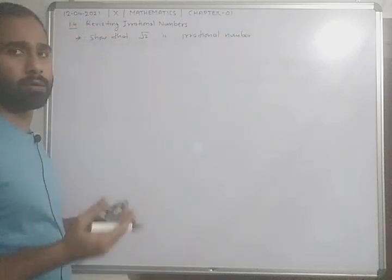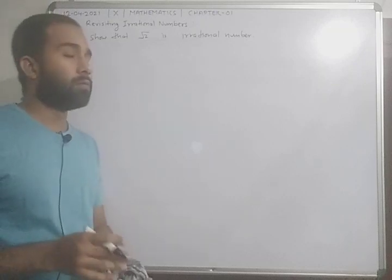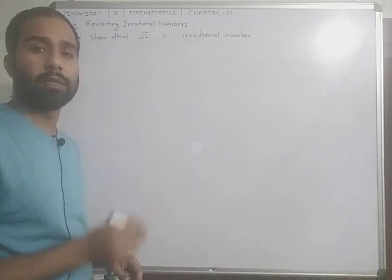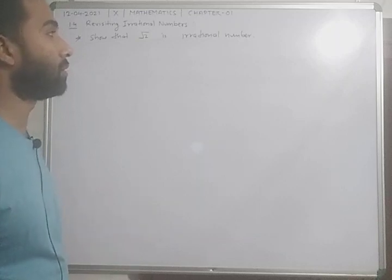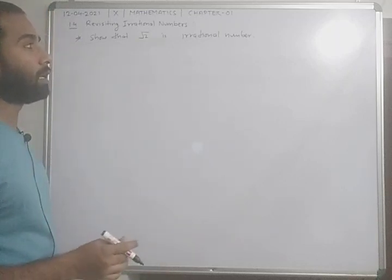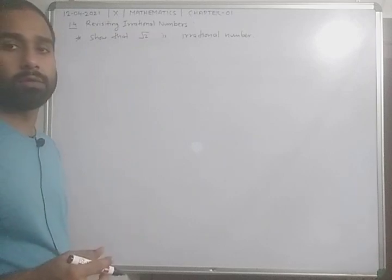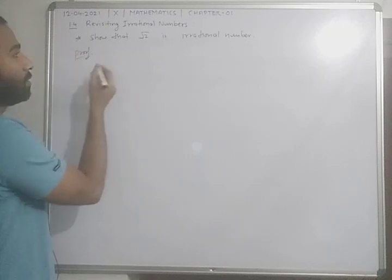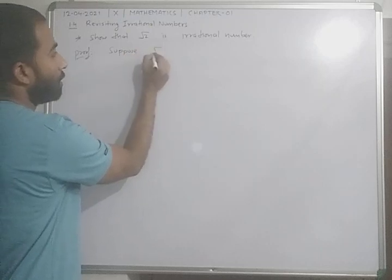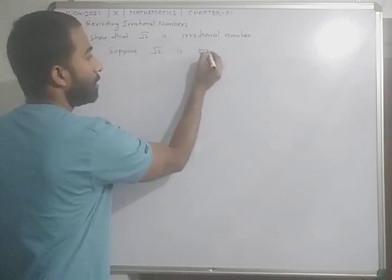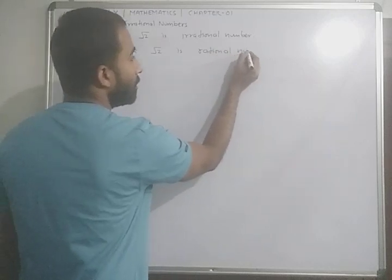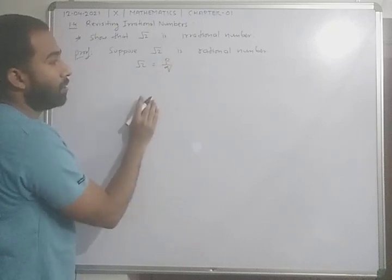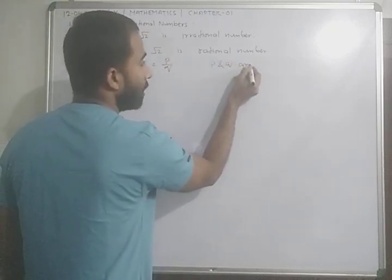We all know that under root 2 is an irrational number. To prove this, first of all we will consider or assume under root 2 as a rational number. So let's start the proof. Suppose under root 2 is a rational number. Then it will be equal to P by Q, where P and Q are co-primes.